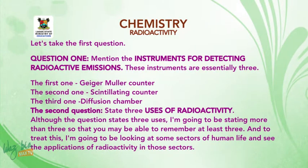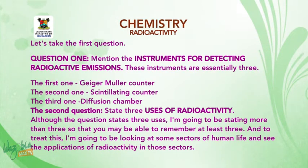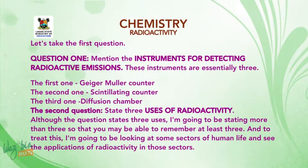These instruments are essentially three. The first one: Geiger-Müller counter. The second one: scintillating counter. The third one: diffusion chamber.